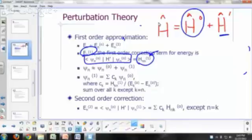Similarly, your wave functions can just be a sum of the zero-order wave function plus a correction term, and here you have the formula for the correction term.